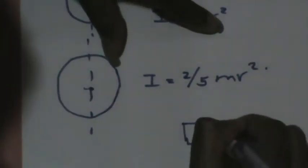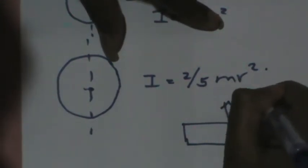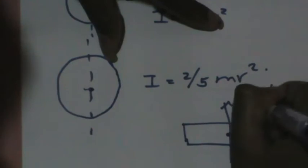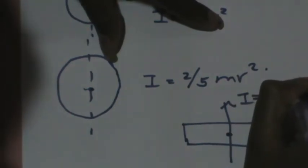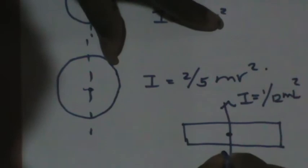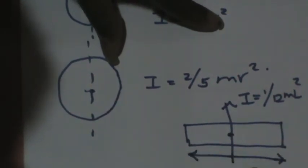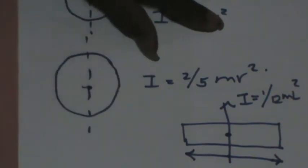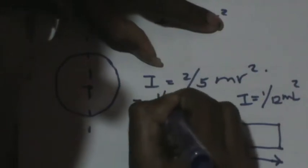Right, but if you take a rod, and if it is going through the center, I is equal to 1/12 times ml².